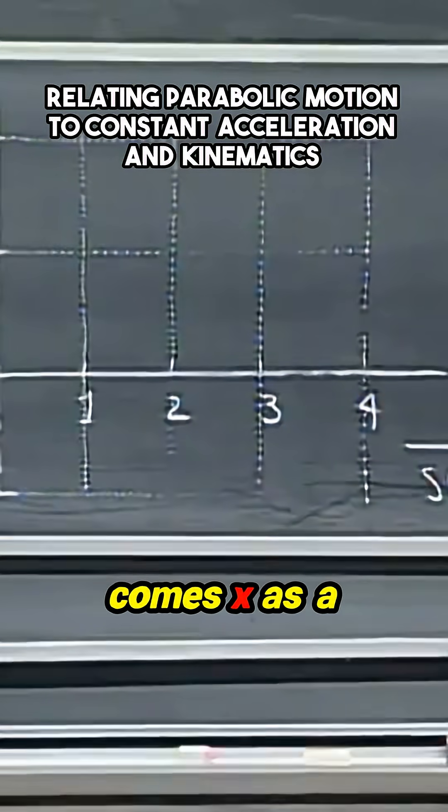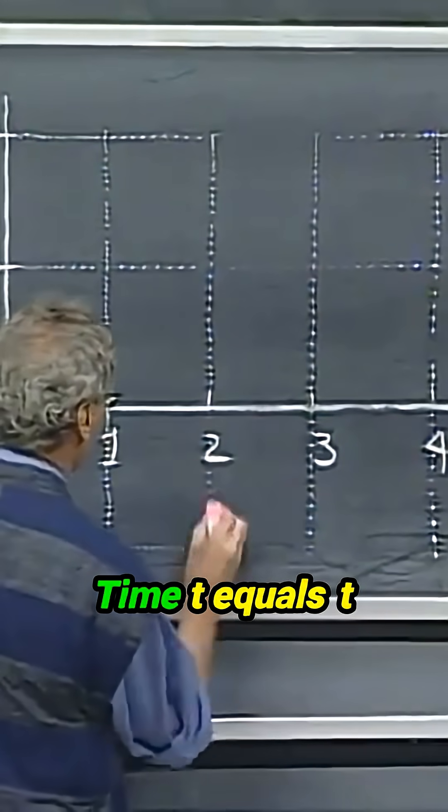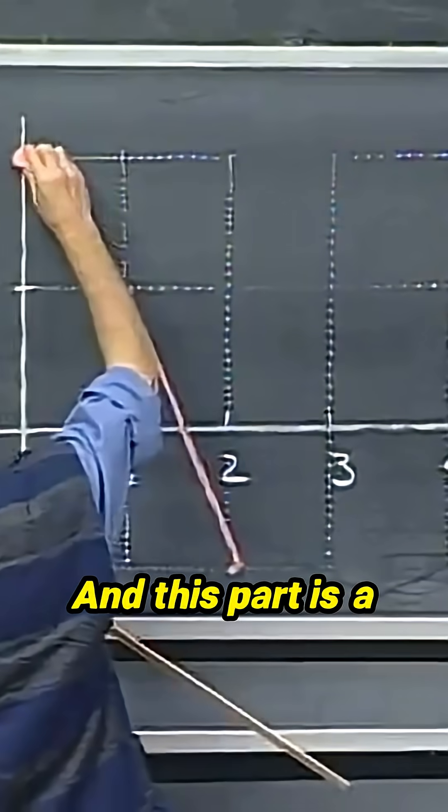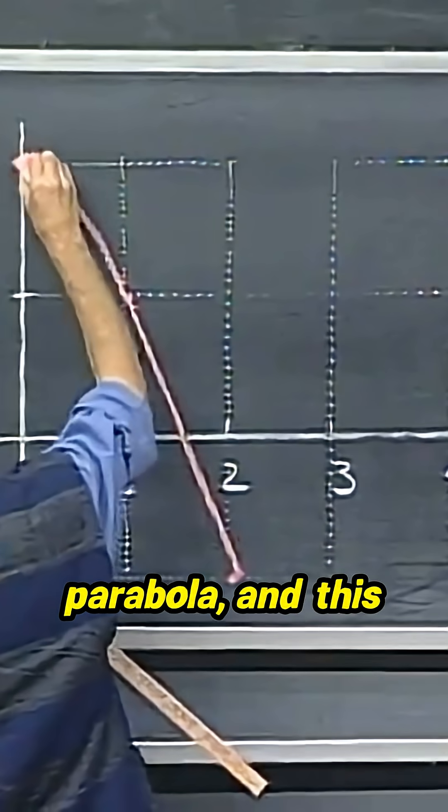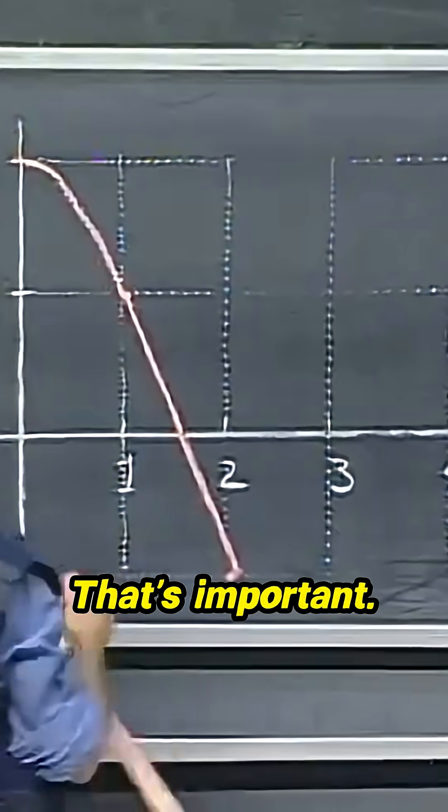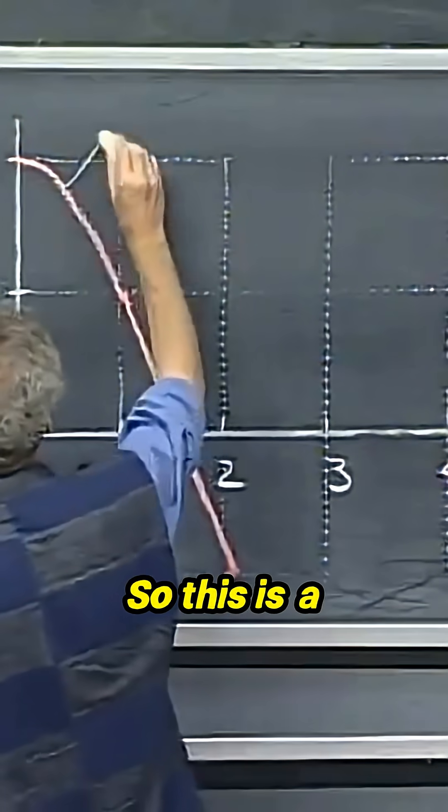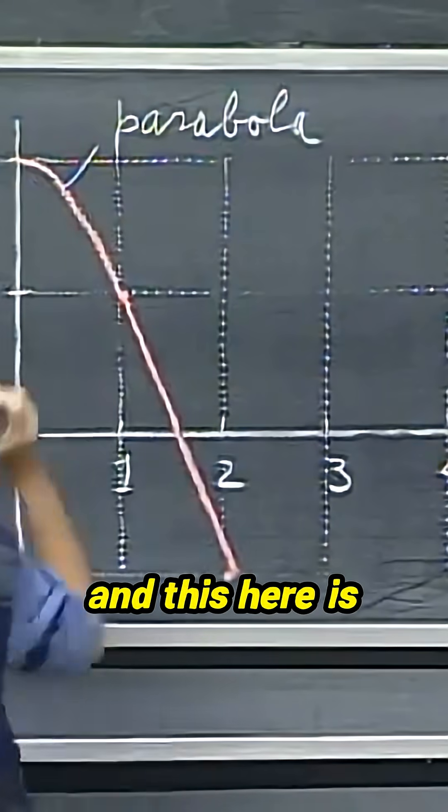All right. So now comes x as a function of time, t equals t seconds, and this part is a parabola. This parabola here is horizontal. That's important. You have to know that.